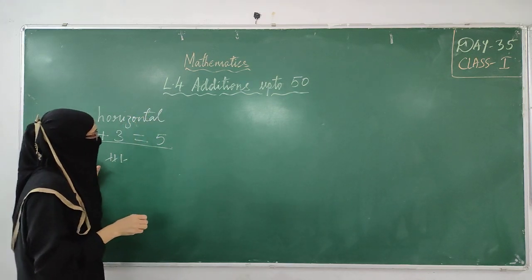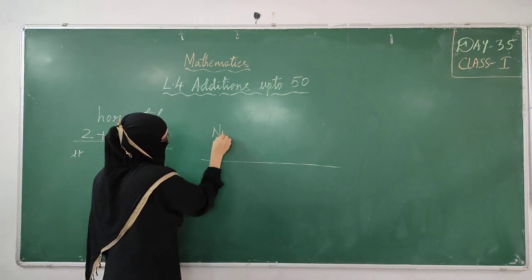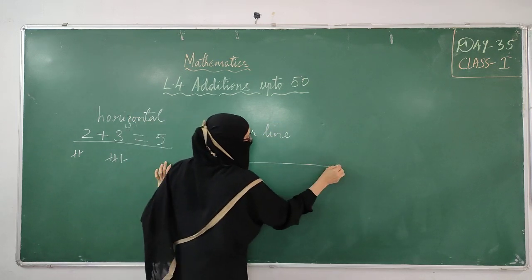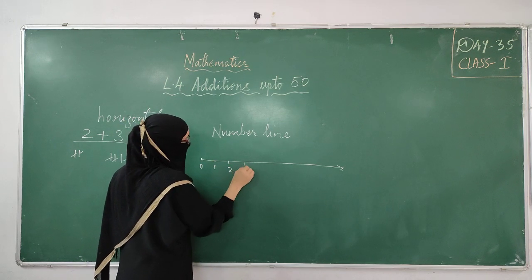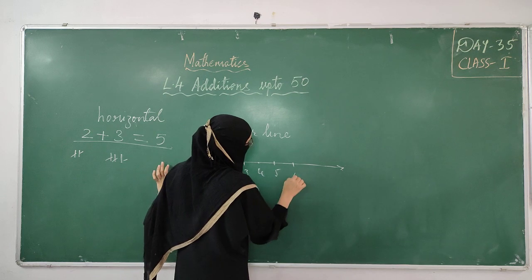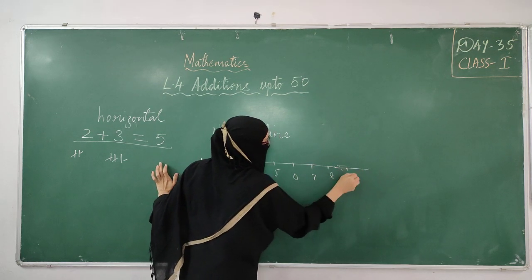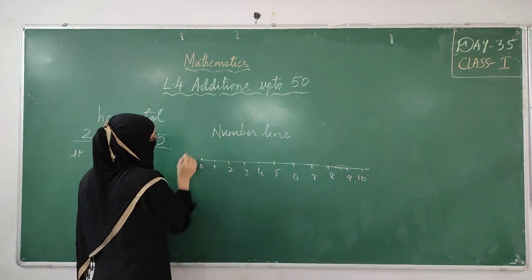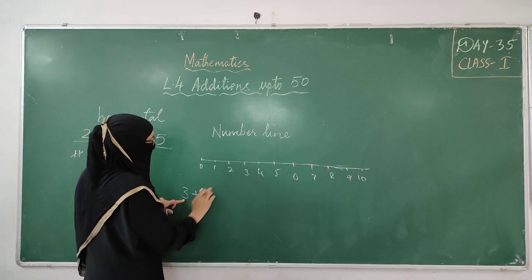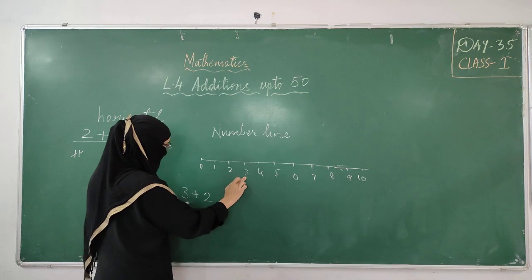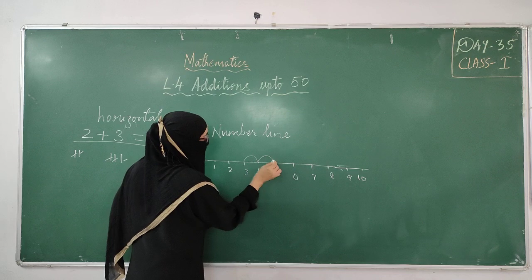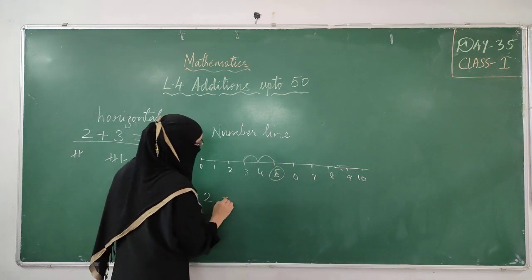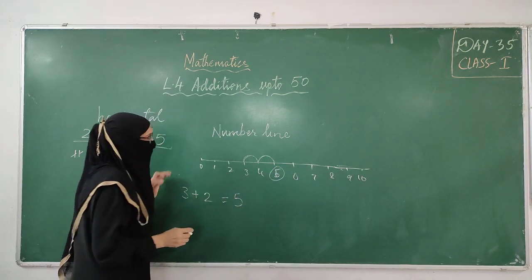Then after this, we studied number line — a line with numbers at equal distance. For example, 3 plus 2: we take the number 3 on the line, then take 2 jumps forward. The number where we stop is the answer. We stopped at 5. That was what we learned in number line.